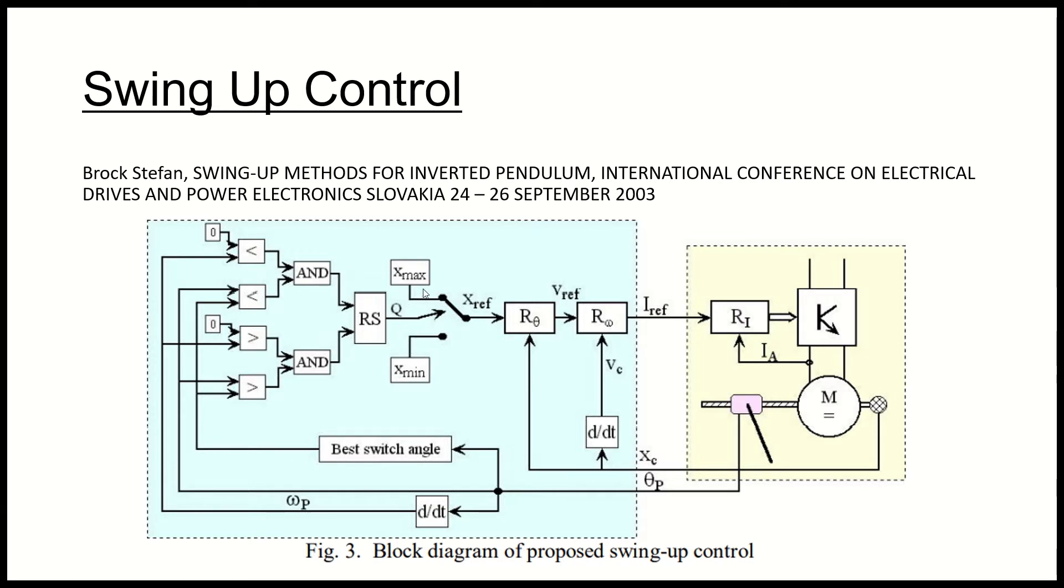That's what this is doing, it's just switching the cart between these two positions. All the logic behind it is basically just telling it when is the optimal time to switch. My control algorithm basically just takes that x ref position which is either the x max or the x min and it compares it to the current position with basically a proportional control on the end of it, and so I get a voltage command which I then send into the DC motor.